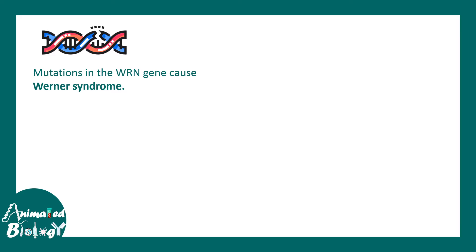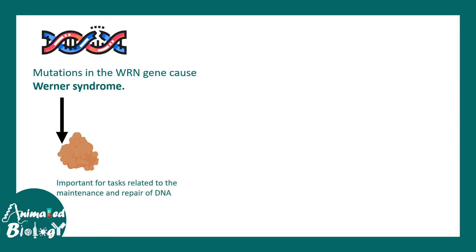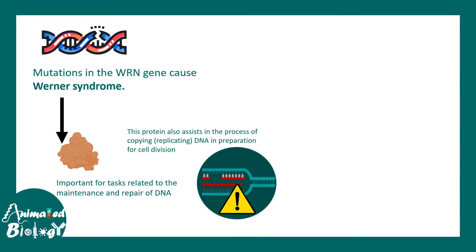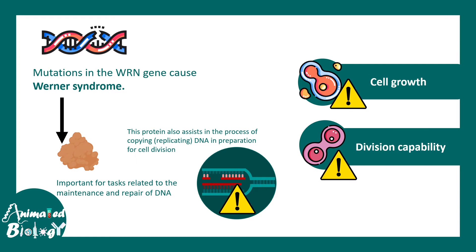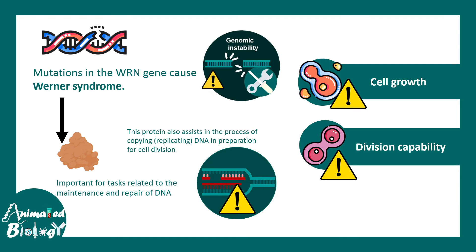Similarly, in Werner syndrome, the WRN gene encodes a protein involved in DNA repair and maintenance. When this protein is absent, DNA replication stalls and the overall repair process is hampered. In these circumstances, cellular growth and division capability is compromised. This is how we understand that genomic instability is a key driver of the cellular aging process.